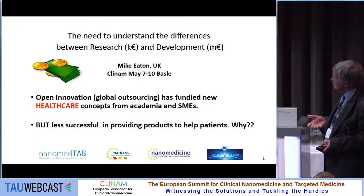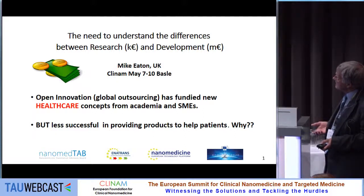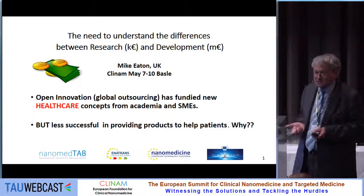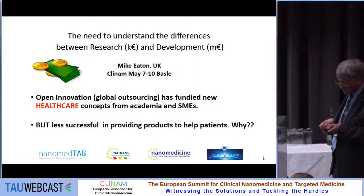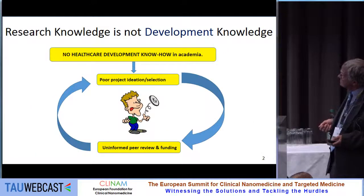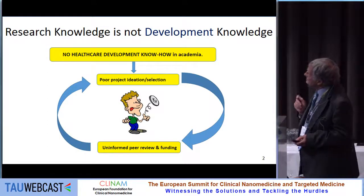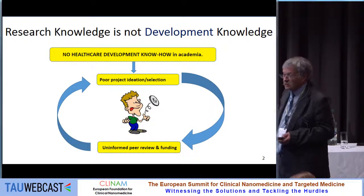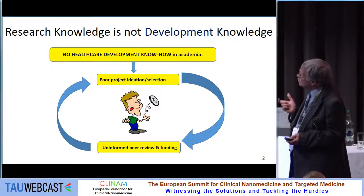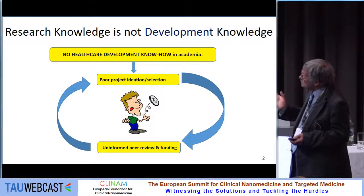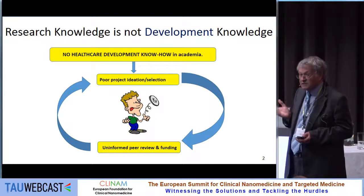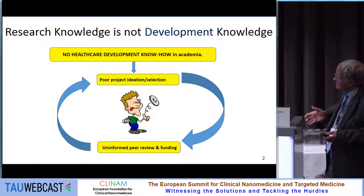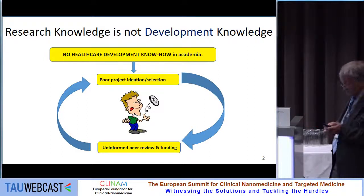One of the issues is the lack of success to date in really producing benefits to patients. There are successes, and my aim is to get more successes and more runners in the race. The real bugbear from translation is there's no real healthcare knowledge or know-how in academia, and this is a real problem. This often leads to poor projects in ideation and selection, and because it's the same people involved, this leads often to uninformed peer reviewing and funding. I often liken it to tossing a coin, or getting a Greek scholar to advise and do the peer reviewing, rather than academics who know what's needed in translation.